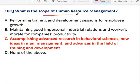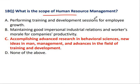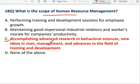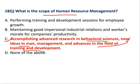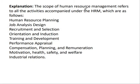Question 18: What is the scope of Human Resource Management? Correct answer is C — accomplishing advanced research in behavioral science, new ideas in management, advances in the field of training and development. The scope of HRM refers to all activities accompanied under HRM: human resource planning, job analysis, design, recruitment, selection, orientation, induction, training and development, performance appraisal, compensation planning, remuneration, motivation, health, safety, welfare, industrial relations, and more — यह सभी इस field में हमारा scope है.